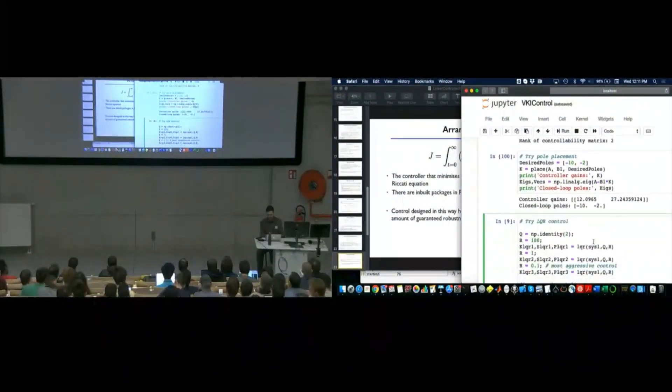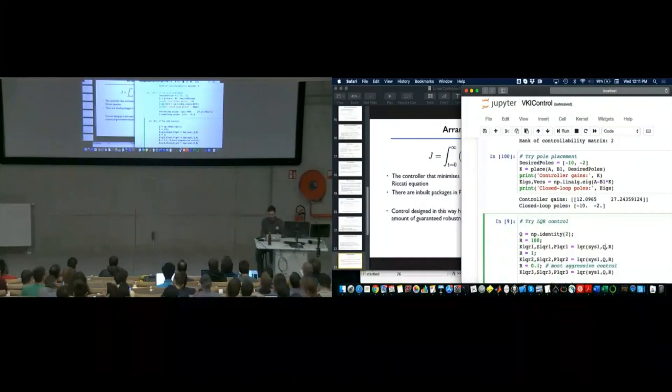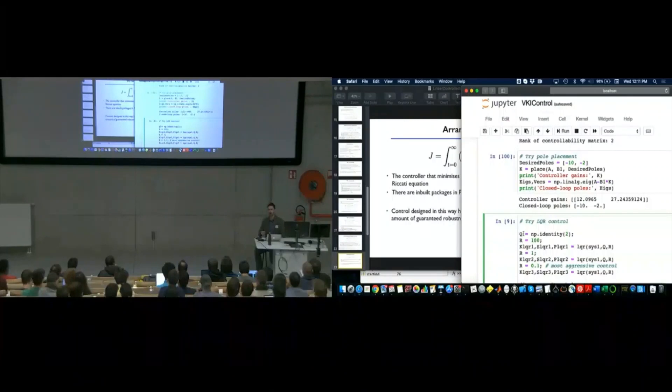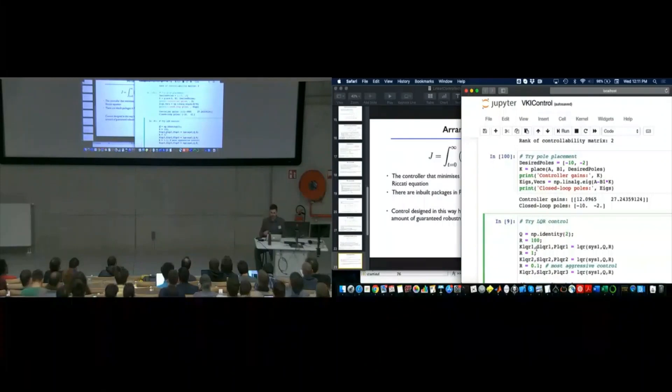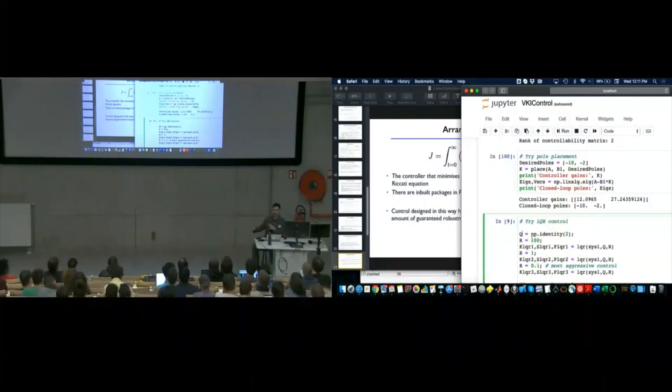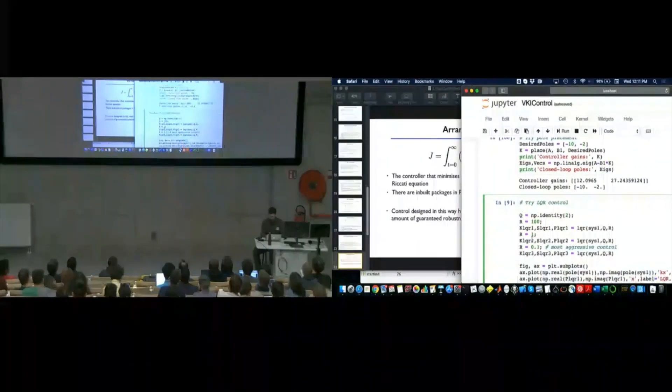So, again, the choices that I have now are my R and Q matrices. Q specifies how much I want to penalize not being at the state that I want to be at. And R penalizes the effort that my controller has to exert. So, let's try three different examples of R. R is a scalar here because I only have a single input to my system. And we'll just take Q to be the identity. And really what matters here is the ratio between the sizes of Q and R.